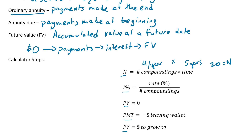For i%, that is the rate as a percentage divided by the number of compoundings. Unlike most math, we don't convert the percentage to a decimal — we just drop the percentage sign and keep it as is. Present value, whenever we're talking about future value, is always going to be zero, because we're always starting with zero dollars for these problems.